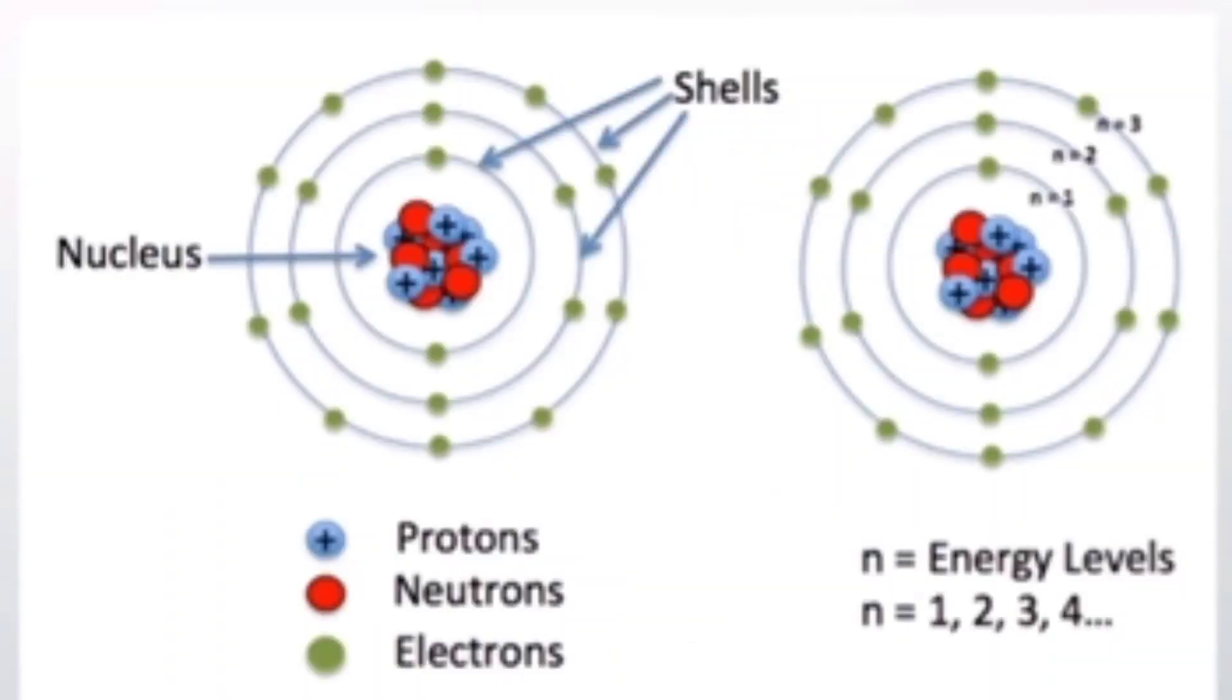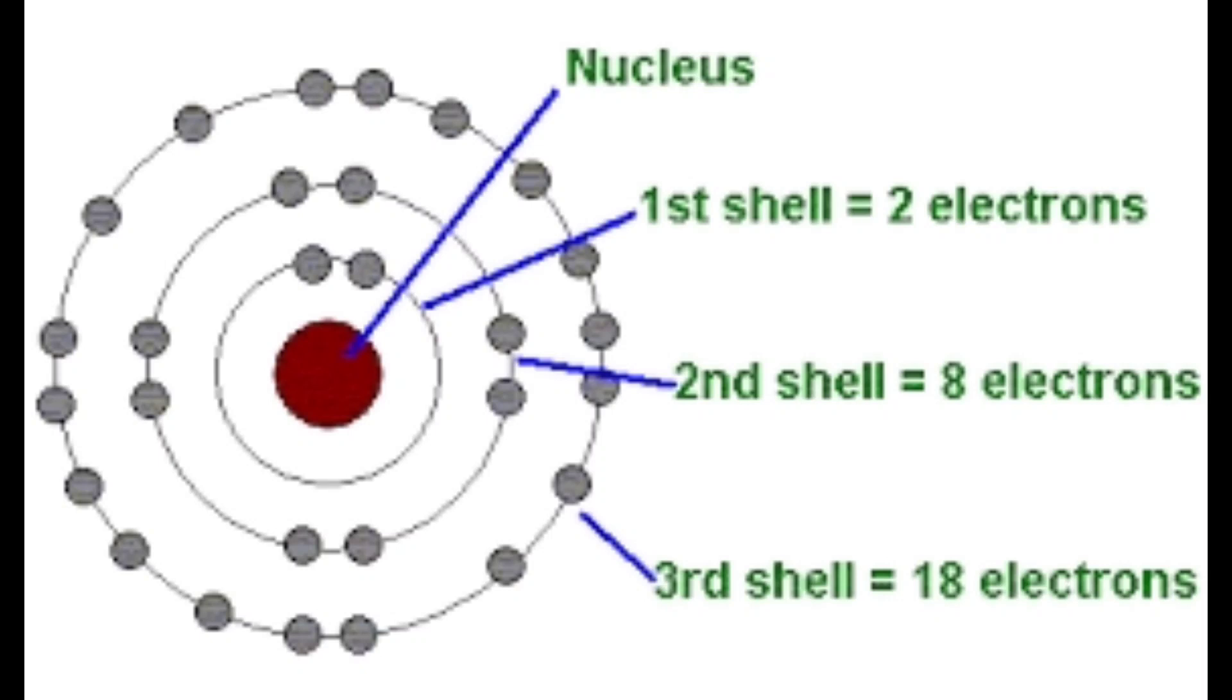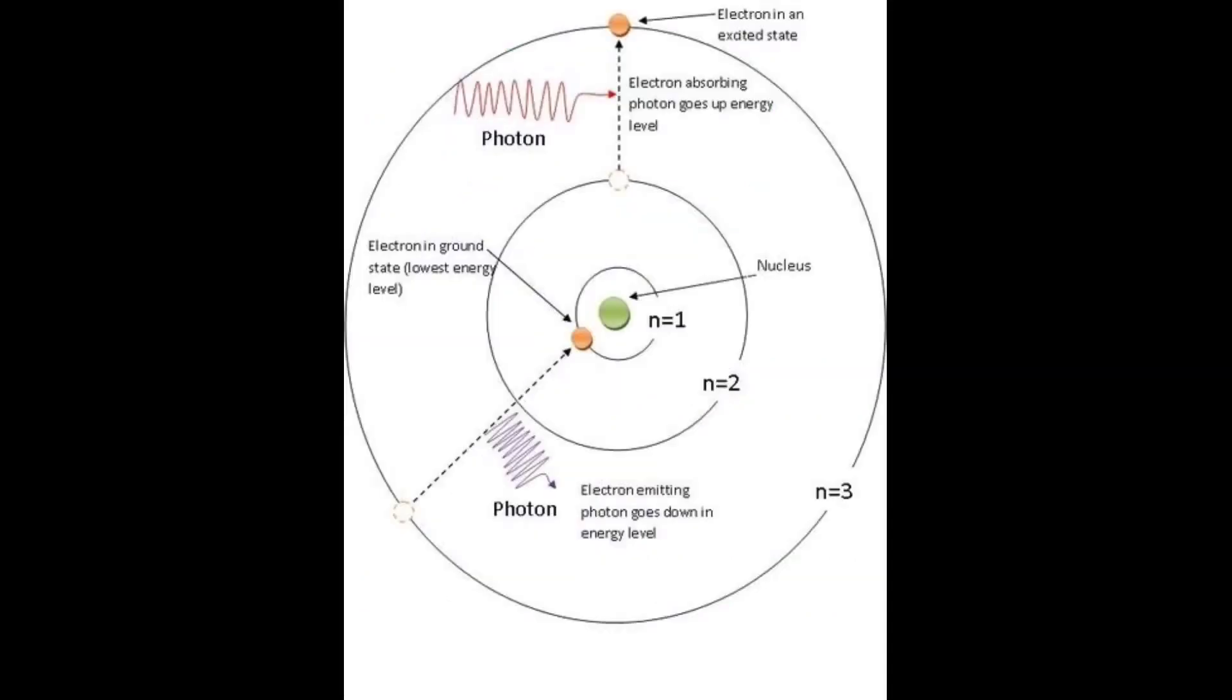Now I am showing you the Bohr's model of an atom. Bohr's model consists of a small nucleus which is positively charged, surrounded by negative electrons moving around the nucleus in orbits. Bohr found that an electron located away from the nucleus has more energy, and electrons close to the nucleus have less energy.